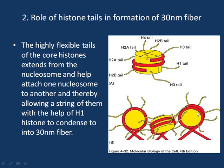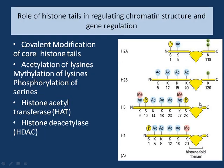The histone tails play a very important role in chromatin structure and regulation of gene expression. Histones are proteins with N-terminal and C-terminal ends. The end tails of all histones have very conserved sequences, but certain covalent modifications take place on these histone tails. These modifications include acetylation of lysine residues (denoted K), phosphorylation of serine, and phosphorylation of lysine.